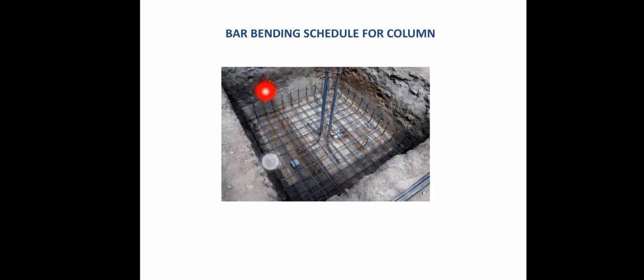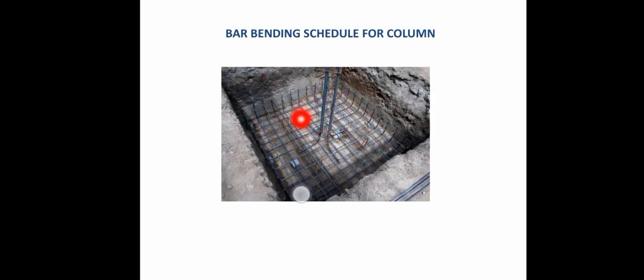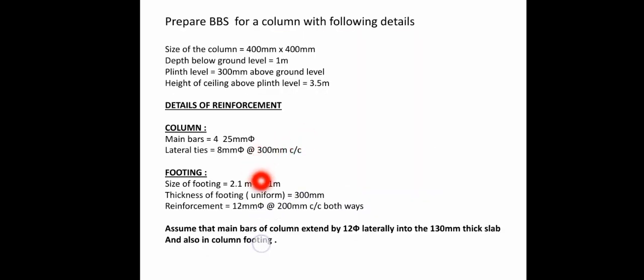This is our column shown in the plan. In the plan you can see the main bars and the distribution bars provided in the footing. This is the sectional plan — the column is provided in the center, and you can see both the main bars and distribution bars in the footing.